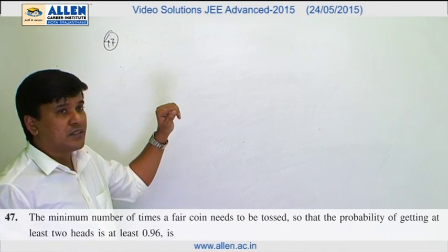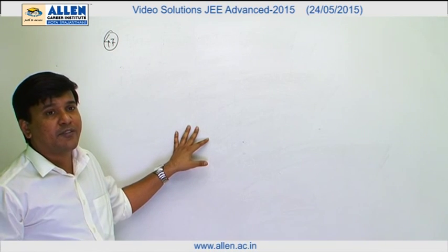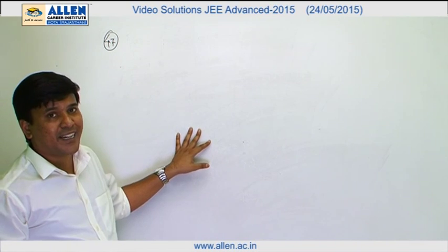In this question, we have been asked minimum number of times a fair coin must be tossed so that the probability of at least 2 heads is at least 0.96.